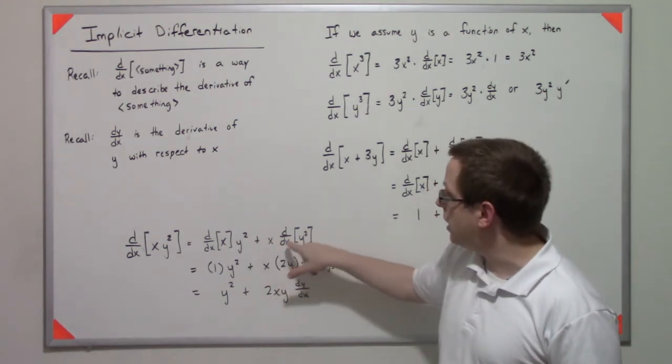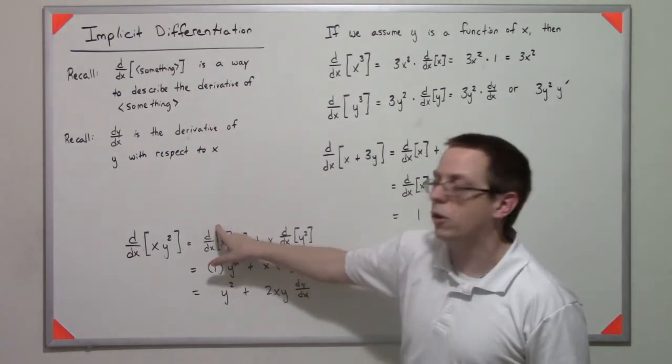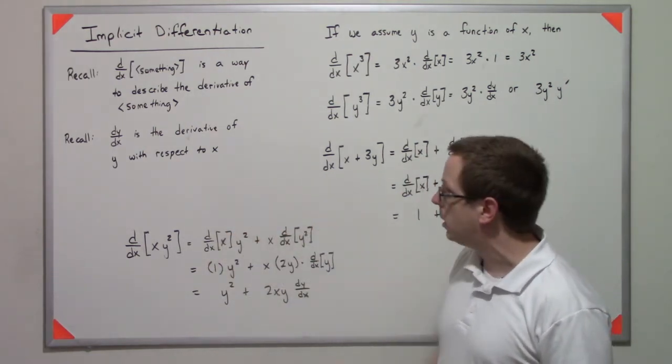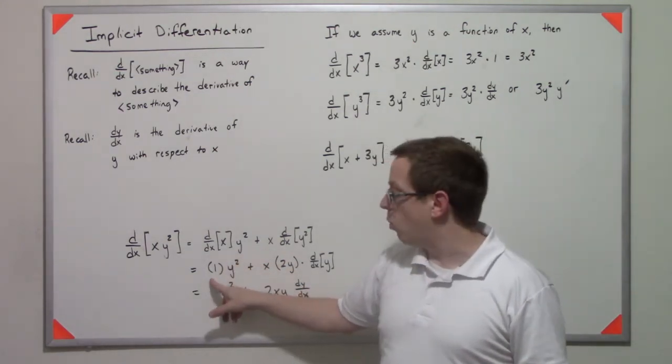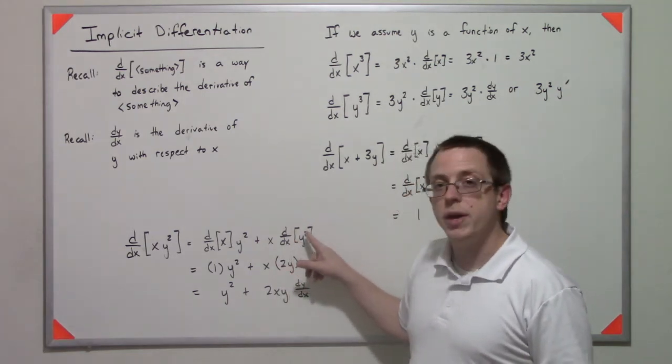In the first grouping it's the derivative of the first term, and in the second grouping is the derivative of the second term. We know the derivative of x with respect to itself is one, but over here we have y², so we have to follow the power rule and then chain rule.